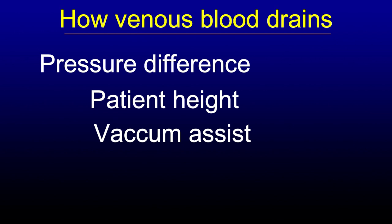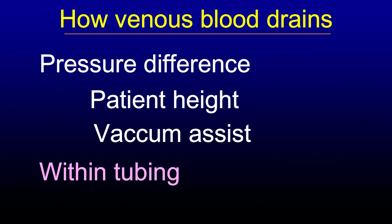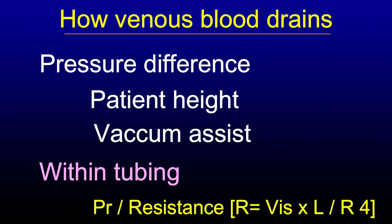The second factor is vacuum assist. If you reduce the pressure within the reservoir by means of vacuum, the pressure difference between the patient and the reservoir increases, thereby increasing the flow from the patient to the venous reservoir. The third aspect is the resistance offered by the tubing. One has to remember Poiseuille's law — resistance is inversely proportional to the fourth power of the radius of the tube. Always keep the tubing length short to have better flow to the venous reservoir.